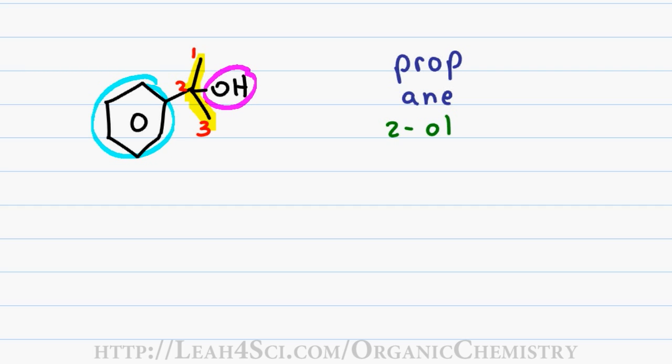Having the benzene substituent on carbon two gives me the prefix two-phenyl. I pull the two in front of the word prop, drop the e in ain and get a final name of two-phenyl, two-propanol.